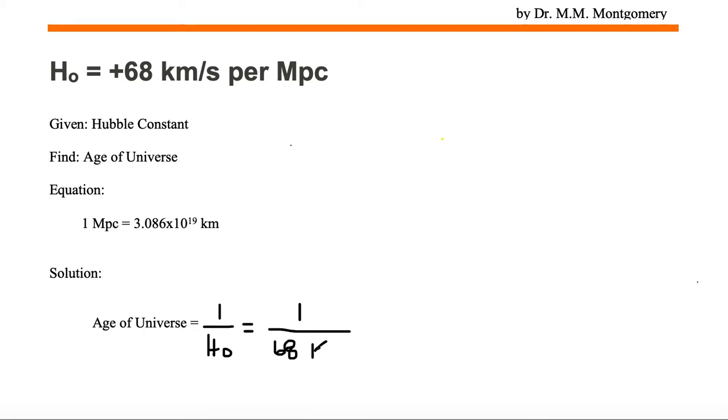I'm going to put a kilometer on the denominator side, a second on the numerator side, because that's kilometers per second, per megaparsec. And since it's per megaparsec, I'm going to put my megaparsec on the numerator side.